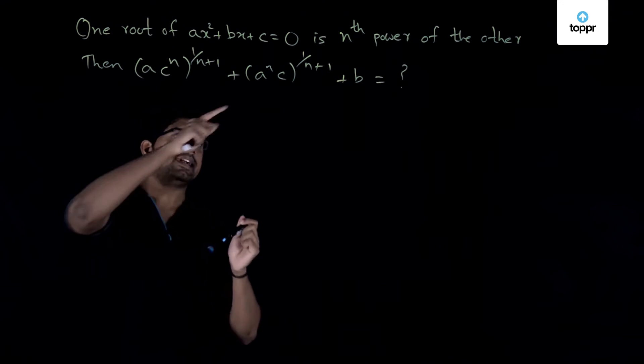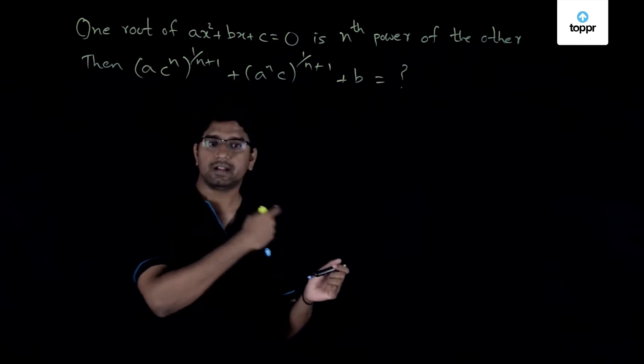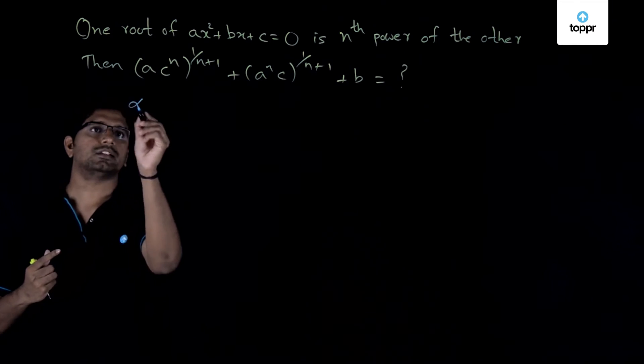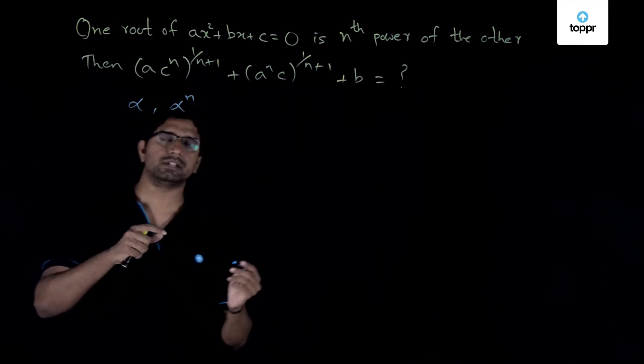So in this case, if you take one root as alpha, definitely I can take the other root as alpha power n. So that is the first thing. So alpha and alpha power n are the two roots of the equation.